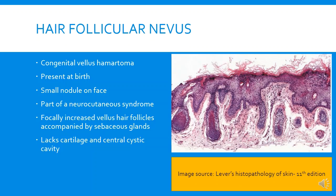Hair follicular nevus, also known as congenital vellus hamartoma, is present at birth as a small nodule on the face and is part of a neurocutaneous syndrome, similar to nevus sebaceous. Histologically, there is focally increased vellus hair follicles accompanied by sebaceous glands. It lacks cartilage (otherwise it would resemble an accessory tragus) and lacks a central cystic cavity. It is primarily a tumor with numerous vellus hair follicles.